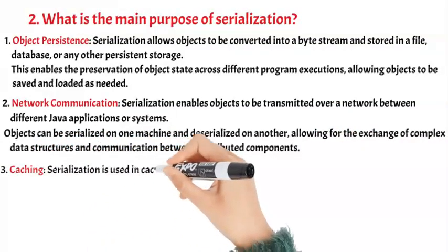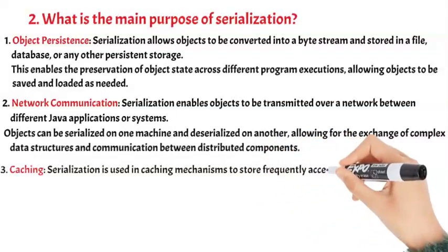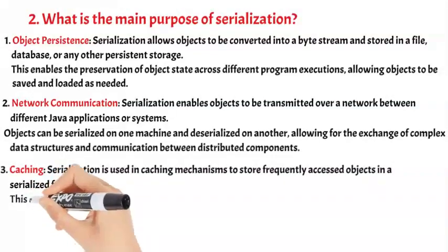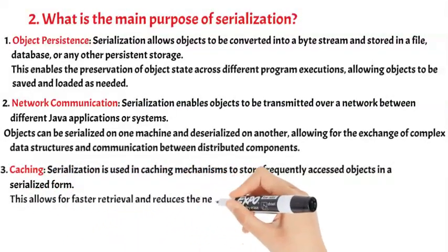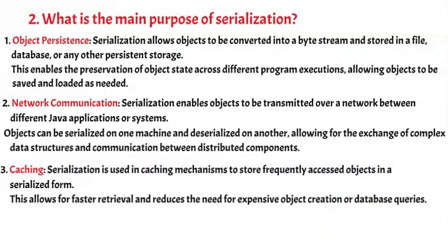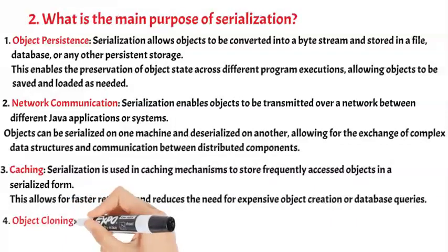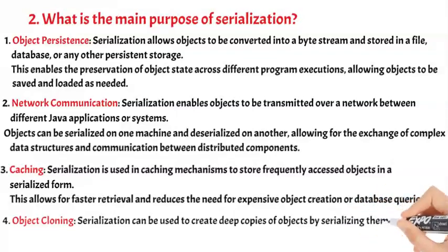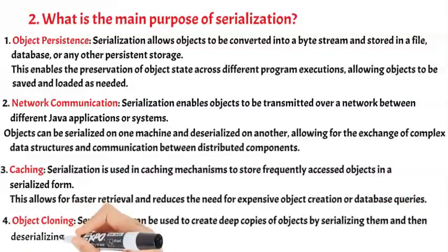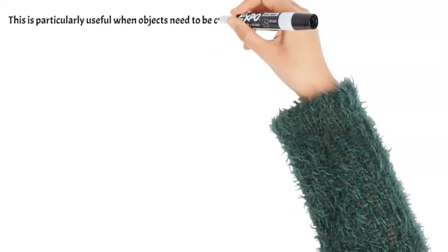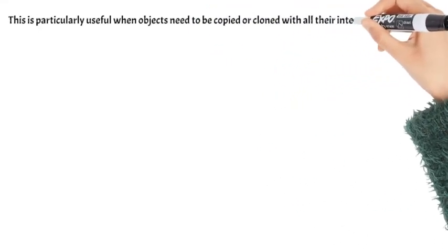Caching: Serialization is used in caching mechanisms to store frequently accessed objects in a serialized form. This allows for faster retrieval and reduces the need for expensive object creation or database queries. Object cloning: Serialization can be used to create deep copies of objects by serializing them and then deserializing the resulting byte stream. This is particularly useful when objects need to be copied or cloned with all their internal state intact.